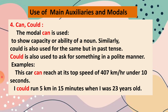The next is can and could. The modal can is used to show the capacity and ability of a noun. Similarly, could is also used for the same but in the past tense. Could is also used to ask for something in a polite manner. For example: This car can reach its top speed of 407 km per hour under 10 seconds. I could run 5 km in 15 minutes when I was 23 years old. So can is used in the present tense and could is used to show ability in the past tense.